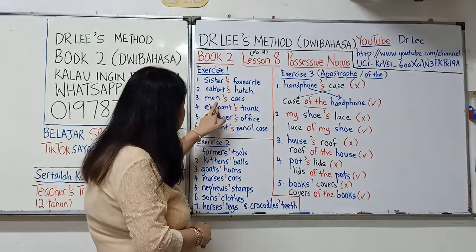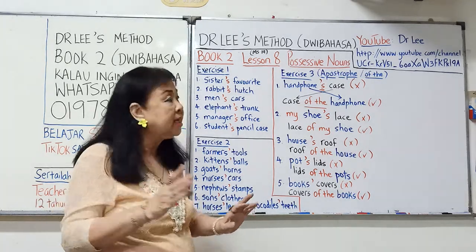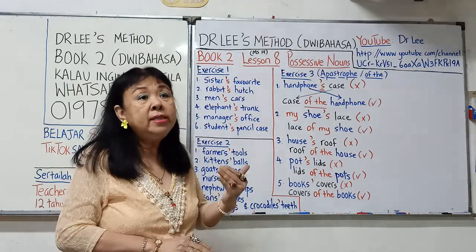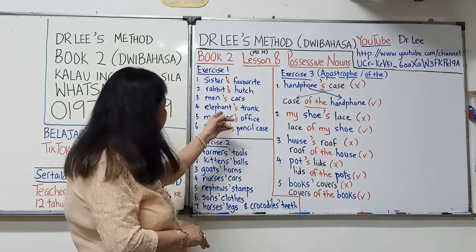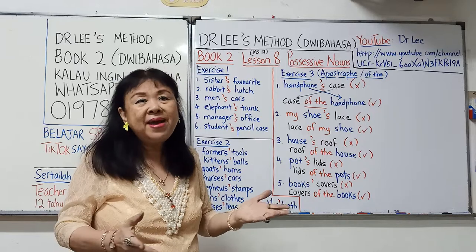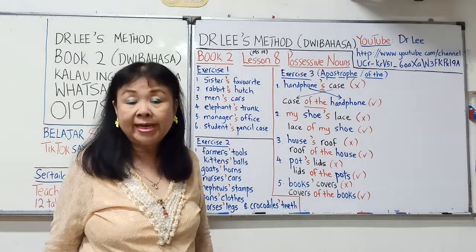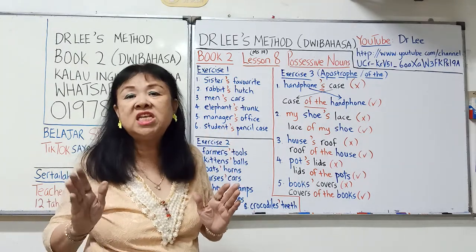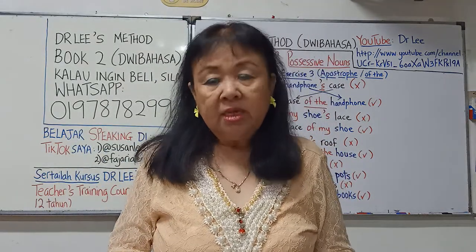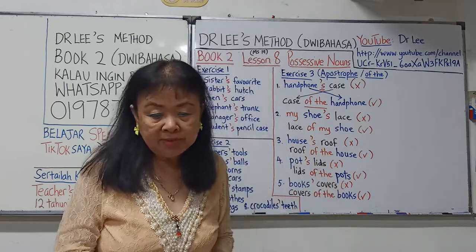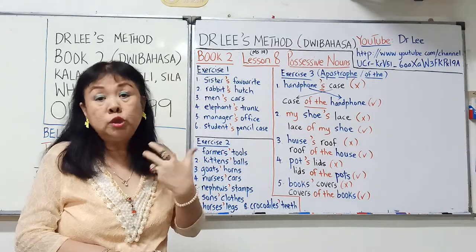Tengok contoh: sister, rabbit, man. Man itu agak istimewa sebab M-A-N, M-E-N — serendak kita gunakan apostrophe S sebab man tak boleh tambah S. Sister boleh tambah S, rabbit boleh tambah S, elephant, manager, student boleh tambah S. Tapi man tak boleh, oleh itu kita semua serendak menggunakan apostrophe S untuk bermaksud punya. Contoh: 'That is her sister's favorite handbag.' Kakak punya handbag yang dia paling sukai.